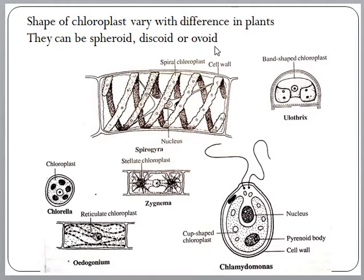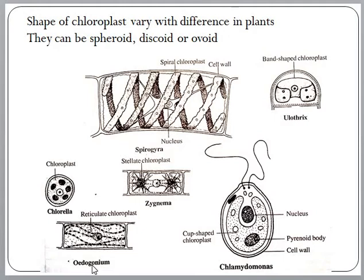The shape of chloroplasts can vary across plants. They can be spheroid, discoid, or ovoid. In spirogyra algae, we can see spiral shaped chloroplasts. In eulothrix, band shaped or girdle shaped chloroplast is seen. In chlamydomonas, we can see a cup shaped chloroplast. Stellate or star shaped chloroplast is observed in signima. A reticulate or network type chloroplast is seen in eudogonium. These are the different shapes of chloroplasts present in the plant kingdom.